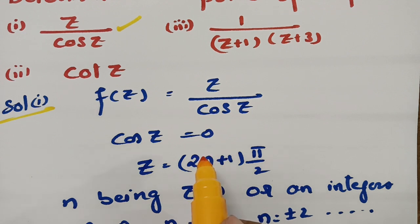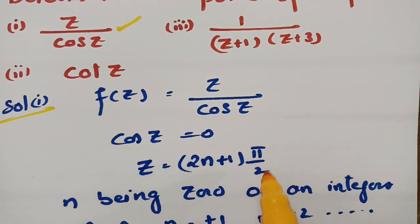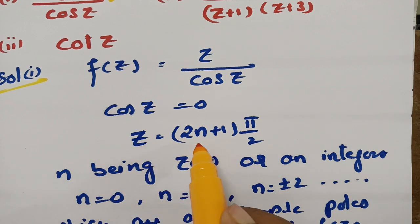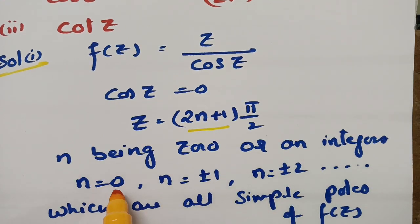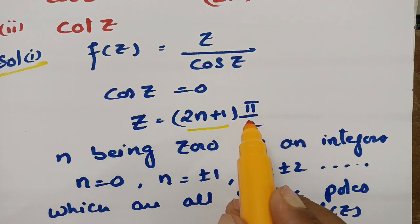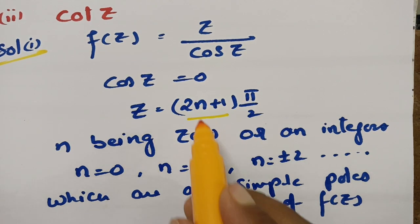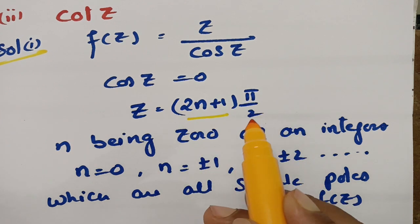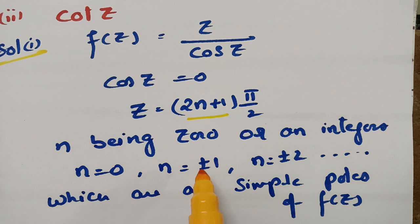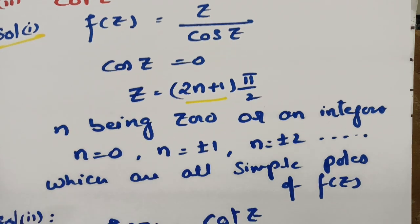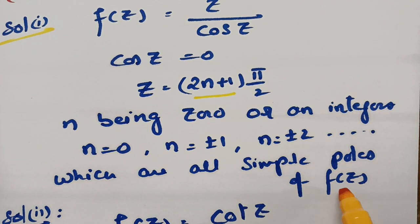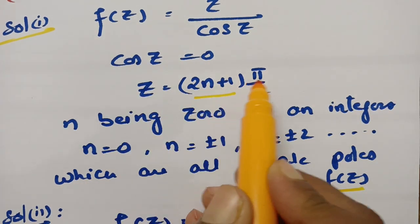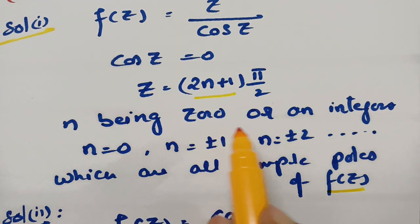When will cos z be 0? At 90 degrees — not only at 90 degrees, but also at the odd multiples of 90 degrees. So, z is equal to (2n+1)π/2, where n is 0 or any integer. If you keep n = 0, this will be π/2; n = 1 gives 3π/2, then 5π/2, 7π/2 and so on. These are all the simple poles. The poles are z = (2n+1)π/2, n being 0 or an integer.